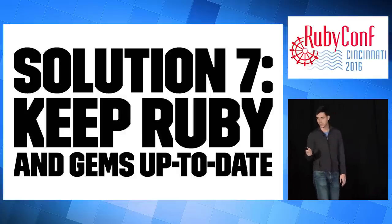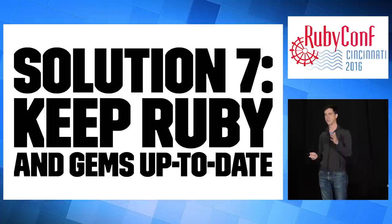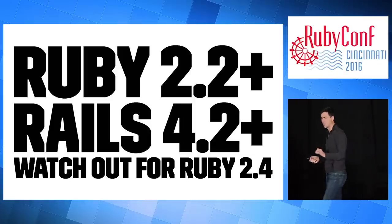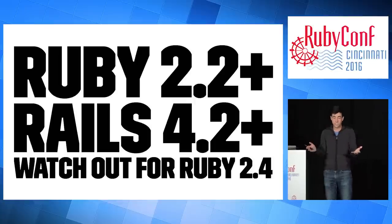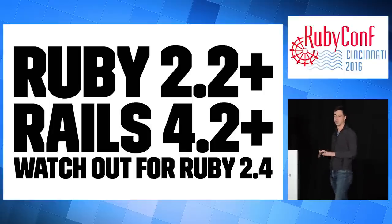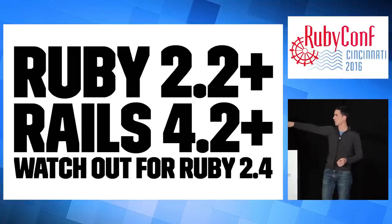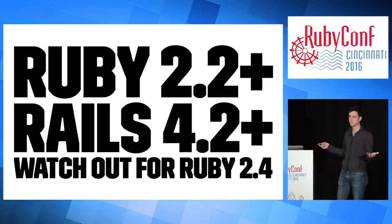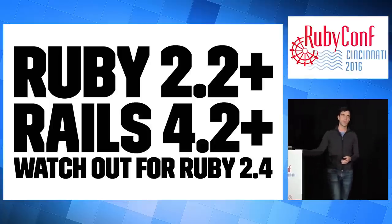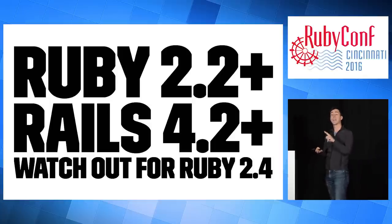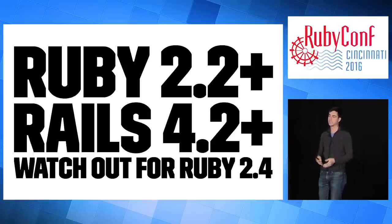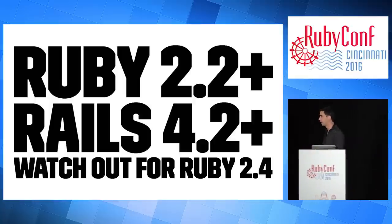Solution seven: keep Ruby and gems up to date. Authors like Richard are working hard all the time on the performance of their libraries — please help them by running bundle update occasionally. My general recommendation is to be on Ruby 2.2+ and Rails 4.2+. Ruby 2.2 had incremental GC. Ruby 2.3 fixes a memory leak in prepend. Rails 4.2 got adequate record for caching ActiveRecord queries. Watch out for Ruby 2.4 when it drops — it'll have a faster hash implementation, faster regex, and additional control over the number of free slots we can return to the OS.